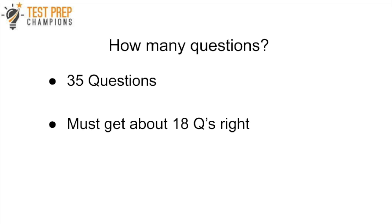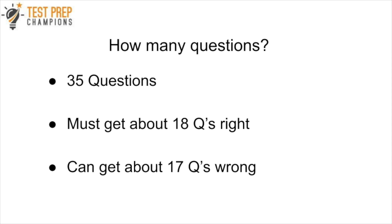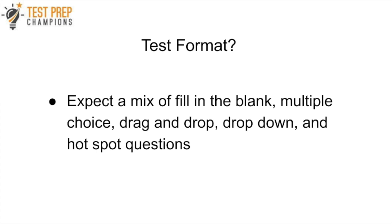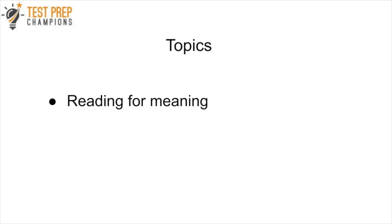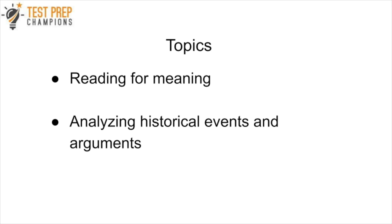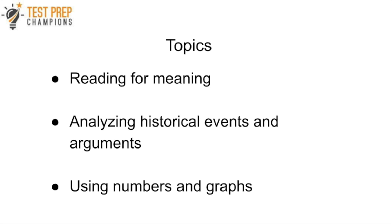The next tip is to know what to expect going into your test. There are going to be about 35 questions, and to pass, you want to get at least 18 correct — meaning you can only afford to get about 17 wrong. The test has one part. You can expect a mix of fill-in-the-blank, drag-and-drop, multiple choice, and hotspot questions. You are allowed to bring a calculator — specifically the TI-30XS Multi-View Calculator, which is also provided free on the computer. Some questions require reading passages for meaning, others ask you to analyze historical events and arguments, while others require you to use graphs, tables, charts, and data.